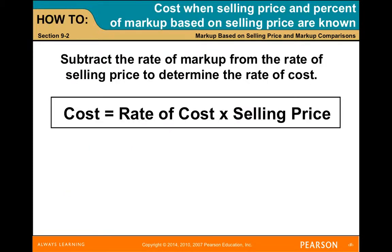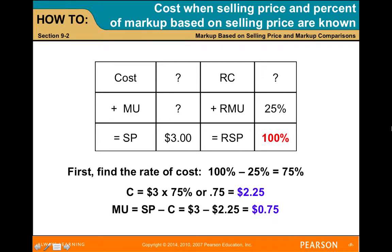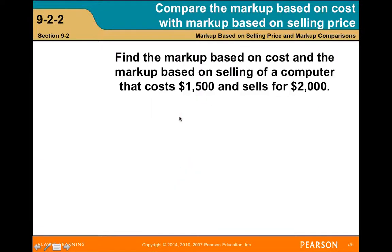Subtract the rate of markup from the rate of selling price to determine the rate of cost. The cost equals the rate of cost times the selling price. For example: selling price $3, retail markup 25%, rate of selling price 100%. So 100% minus 25% equals 75% — the cost is $3 times 0.75 which equals $2.25. Then the markup equals $3.00 minus $2.25, which is $0.75.